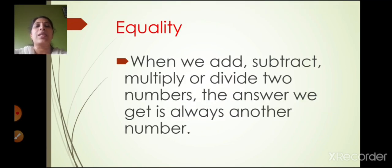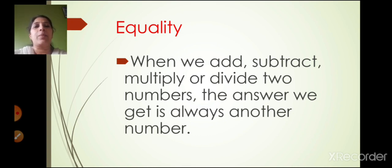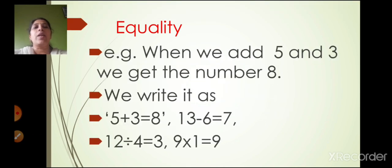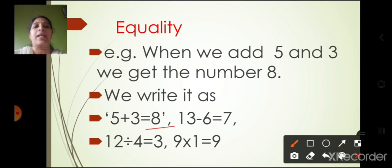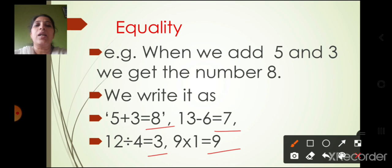Now first let's see what is equality. When we add, subtract, multiply or divide two numbers, the answer we get is always another number. For example: 5 plus 3 gives 8; 13 minus 6 gives 7; 12 divided by 4 gives 3; and 9 into 1 gives 9. So whatever two numbers we take, we always get a different number.